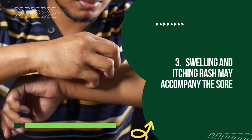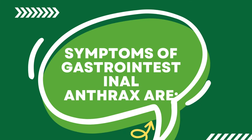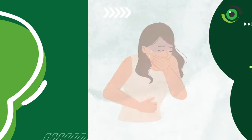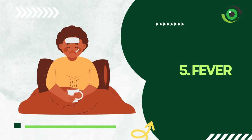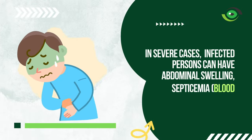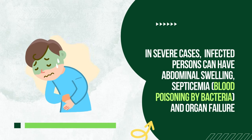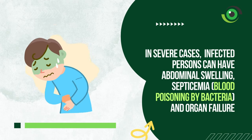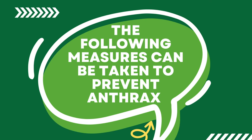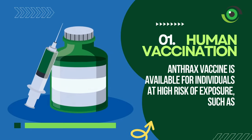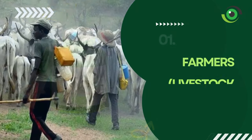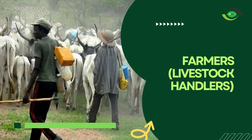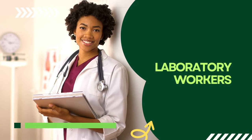Symptoms of gastrointestinal anthrax include nausea. The anthrax vaccine is available for individuals at high risk of exposure such as farmers, livestock handlers, military personnel, and laboratory workers.